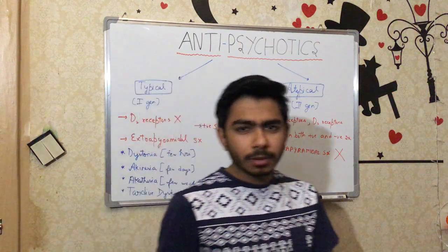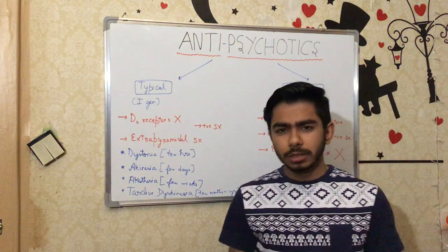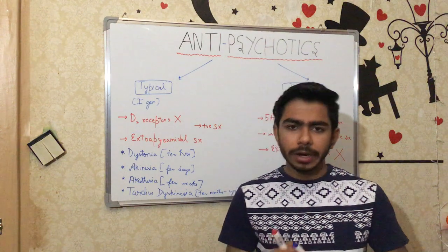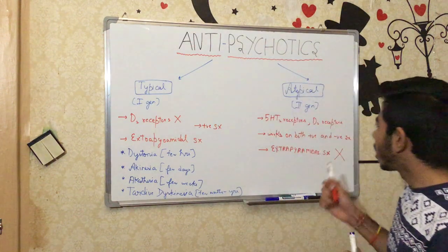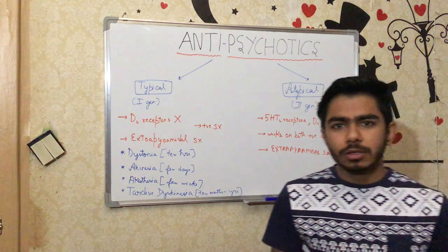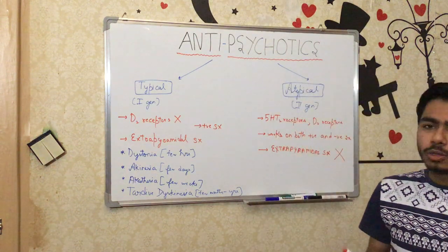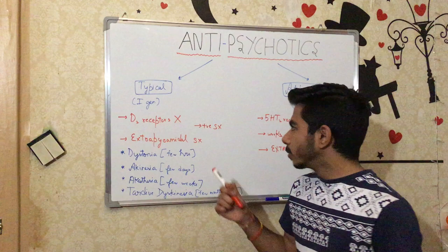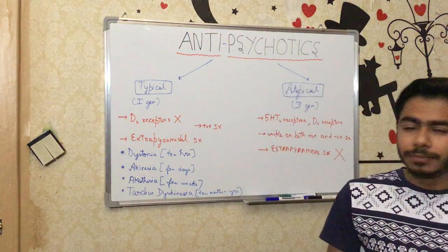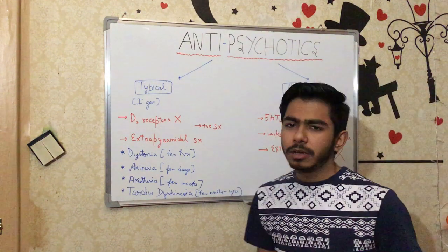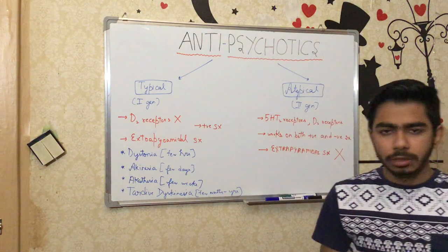Although atypical drugs are more efficient, doctors still prescribe typical antipsychotics because atypical drugs are more expensive and not as affordable. So doctors prescribe typical antipsychotics over atypical ones for cost reasons.